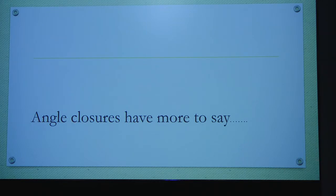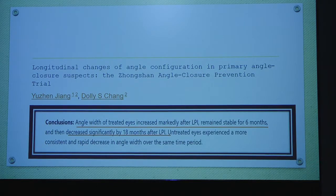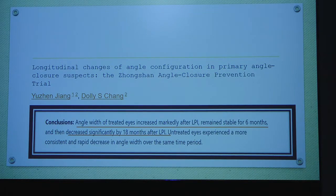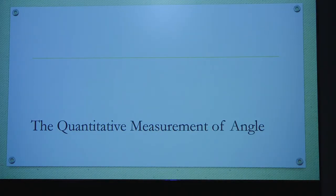Regarding angle closures, the ZAP trial says that angle width — a very important determinant of angle closure — must be monitored. After laser PI, the common thinking is that the angle is open and nothing more will happen, but you have to monitor patients throughout their lifetime. The ZAP trial says that angle width remained stable for six months but then decreased significantly by 18 months after LPI. It is not only a question of 18 months — it's a lifelong tenure that you must continue monitoring patients along with gonioscopy and other modalities.